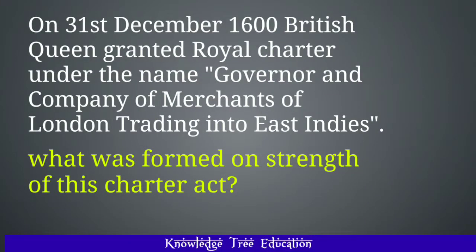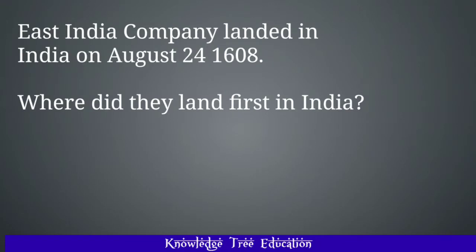On 31st December 1600, British Queen granted Royal Charter under the name Governor and Company of Merchants of London trading into East Indies. What was formed on the strength of this Charter Act? And the answer to this question is the East India Company. The next question: East India Company landed in India on August 24, 1608.